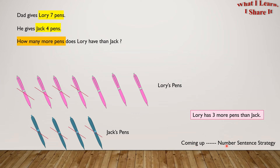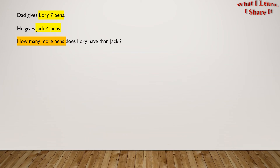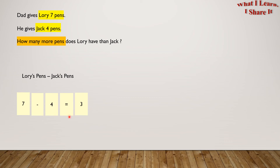Would you also like to see the number sentence strategy? We have the same word problem. Since we are comparing 7 and 4, we can use subtraction to find out how much more Lori has. Lori's pens minus Jack's pens: the number sentence is 7 minus 4 equals 3. So Lori has three more pens than Jack. Yay, we solved the problem!